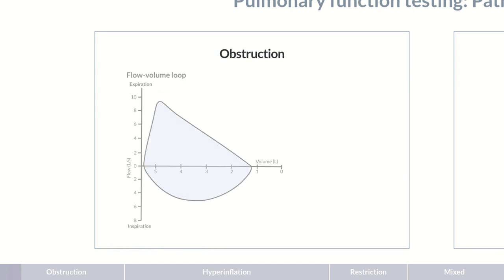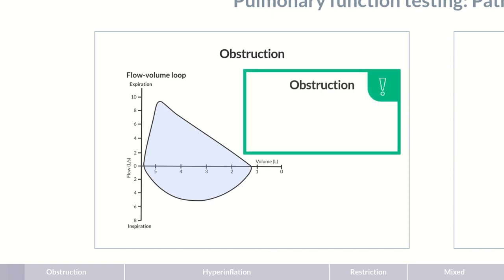Let's begin with obstruction. As a comparison, here's a normal flow-volume loop. An obstruction is the narrowing of the bronchi. Airway narrowing leads to increased airflow resistance when breathing, and therefore, to reduced FEV1 and FEV1 to FVC values.